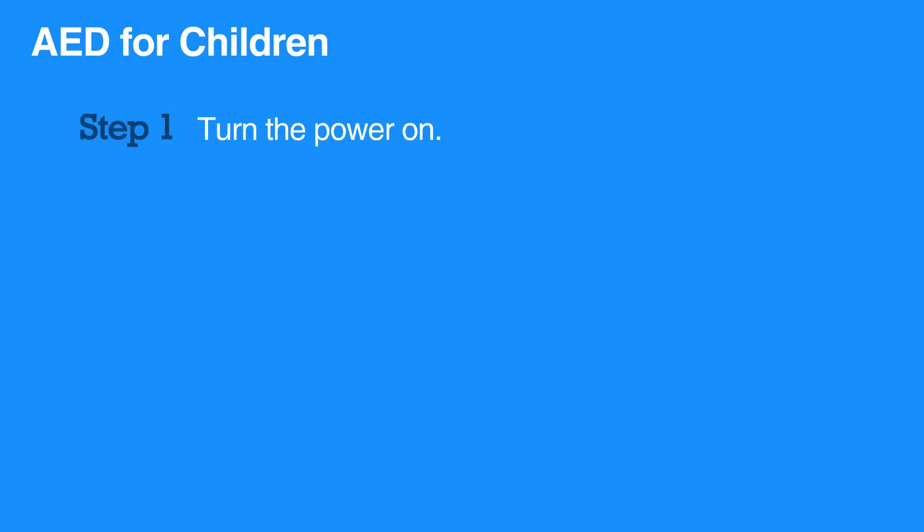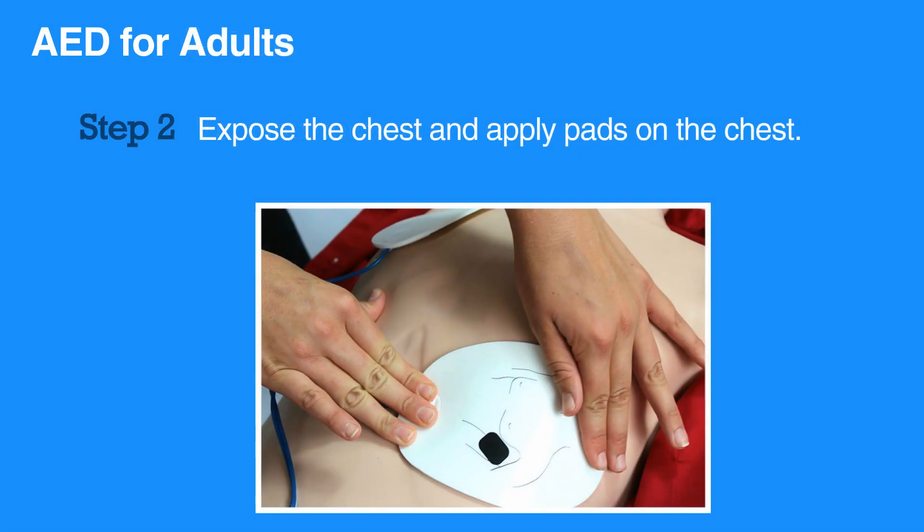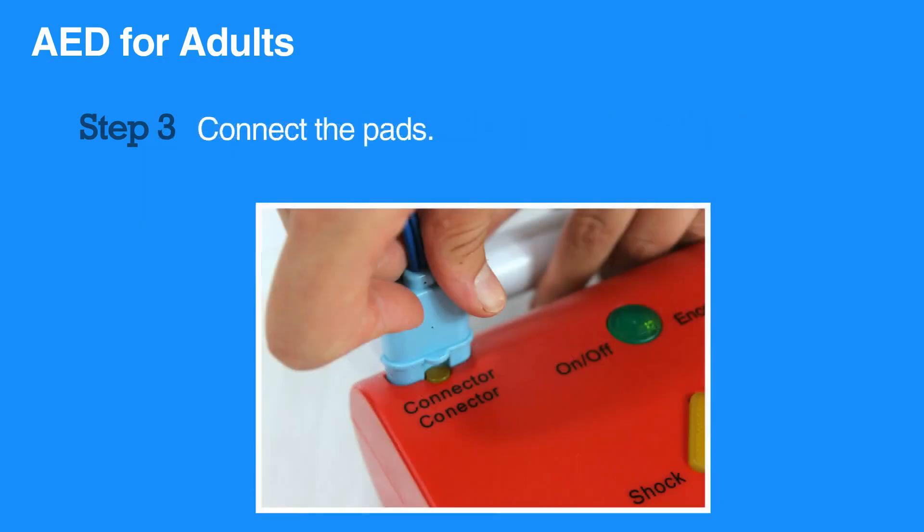To use an AED on a child, first turn the power on. Expose the child's chest, then apply the pads. Ensure that the pads do not touch. Connect the pads to the AED.